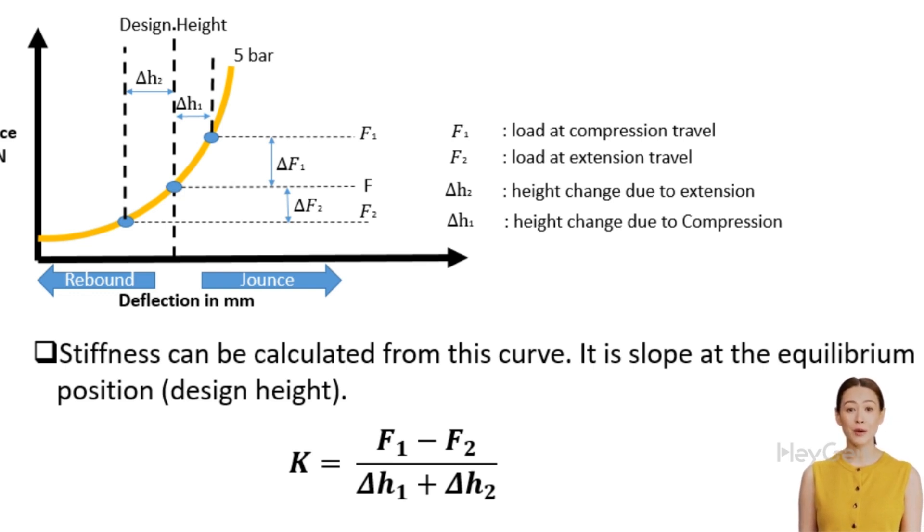Check out F1 and F2. These represent the forces during compression and extension. Meanwhile, ΔH1 and ΔH2 show exactly how much your ride height changes when hitting that pothole or taking a sharp turn.